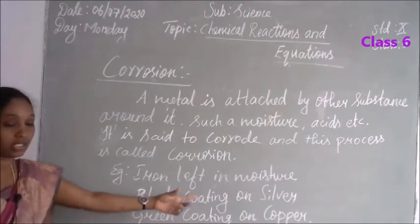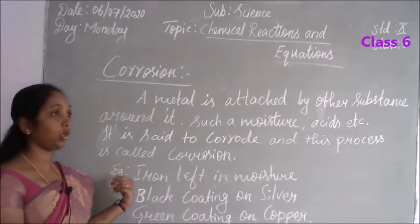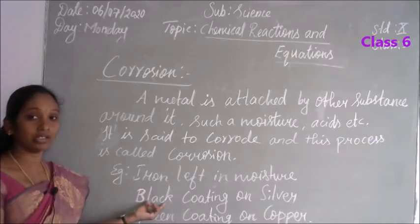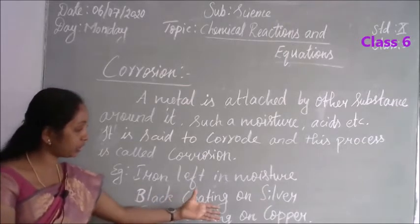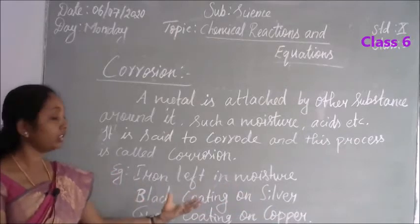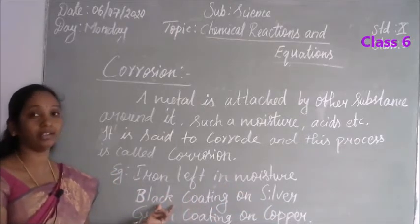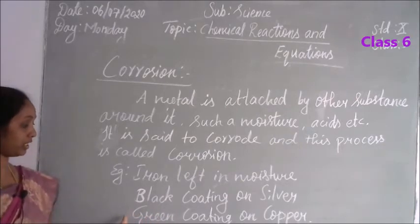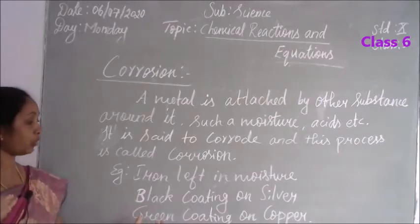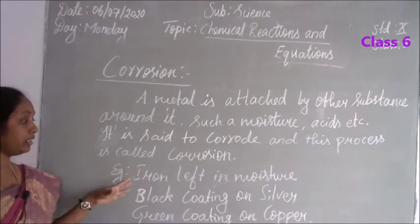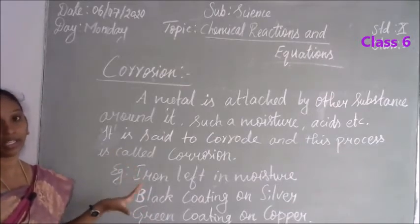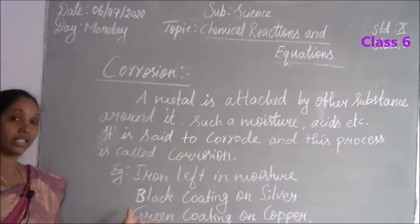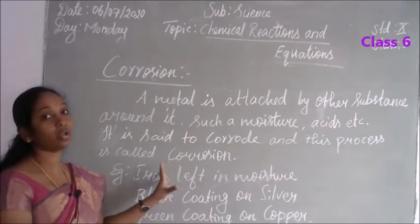Next is the black coating on silver. We use silver ornaments in daily life and when they are exposed to the outside atmosphere, the air reacts with the silver and it becomes black in color. Similarly, copper — like electrical wires — kept outside will develop a green coat upon the brownish copper. These happen due to moisture, water, air, and particularly oxygen combining with the metals to form new substances — that is called corrosion.